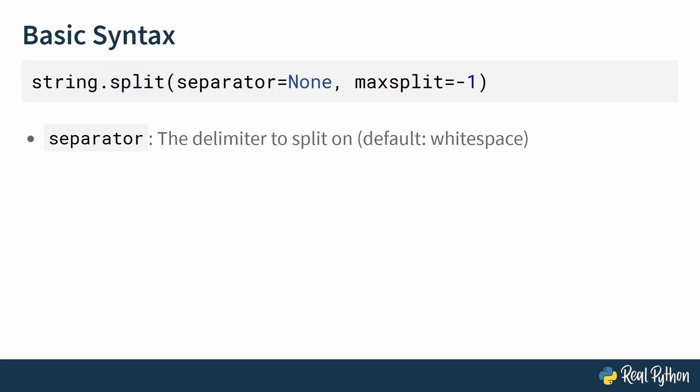Separator is the first argument and it's optional. The separator is the specific string that the split method will search for to decide where to make its cuts. It's your delimiter. If you don't provide anything for separator or if you explicitly pass None, which is the default, split method splits on white space characters, multiple spaces, tabs or new lines. You'll see this in action very soon.